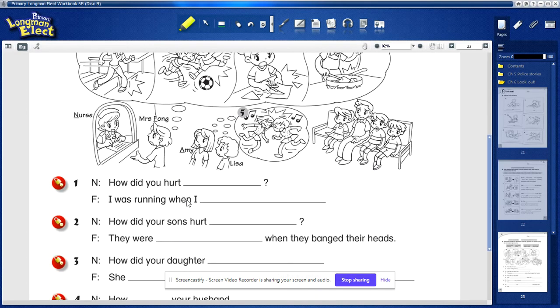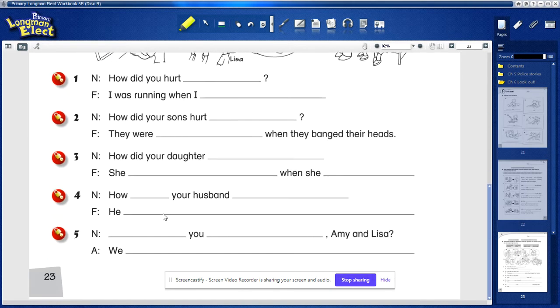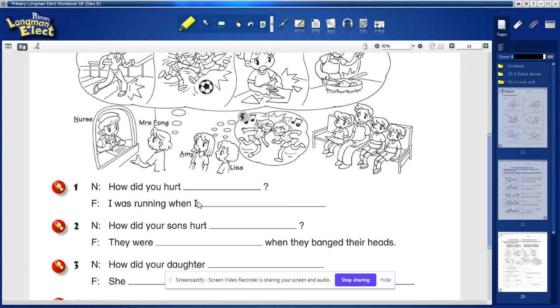Now, the rest are quite straightforward. I just want you to pay attention to the last one. You, Amy and Lisa. So the nurse was asking Mrs. Fong - no, the nurse was asking Amy and Lisa, how did you get hurt? How did you hurt yourself?